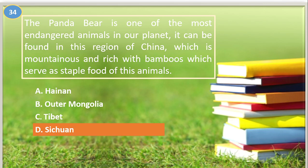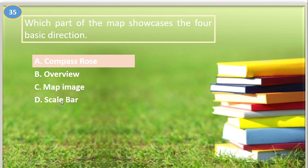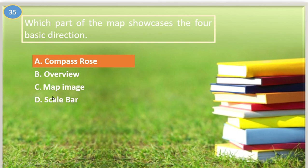Number thirty-five. Which part of the map showcases the four basic directions — North, South, East, West? A. Compass rose, B. Overview, C. Map image, D. Scale bar. The answer is letter A, compass rose. This is a symbol that shows directions on a map.